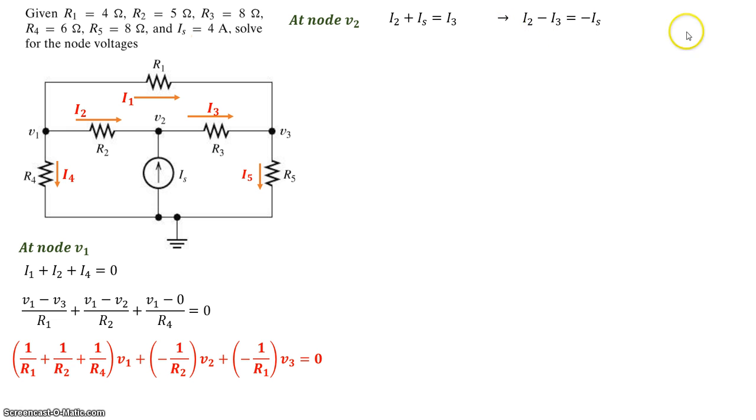Now on this equation, applying Ohm's law again, I2 is V1 minus V2 divided by R2. I3 is V2 minus V3 divided by R3, and Is is given as 4 amps, where we'll just leave it as Is for now. So it's minus Is. Again, just like before, we'll try to collect all the terms for V1, V2, V3, and put it in a standard form.